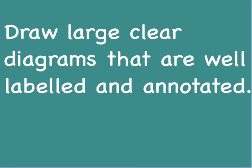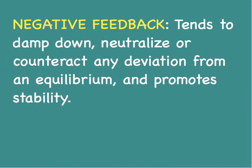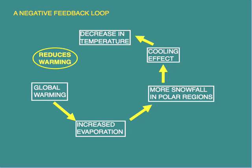Draw large, clear diagrams that are well labelled and annotated. For example, if you are describing negative feedback — a tendency to damp down, neutralize, or counteract any deviation from an equilibrium — it is useful to draw a proper negative feedback loop. This does not require elaborate drawings, but the key aspect is to communicate clearly what the initial state is and how mechanisms change and damp it down.